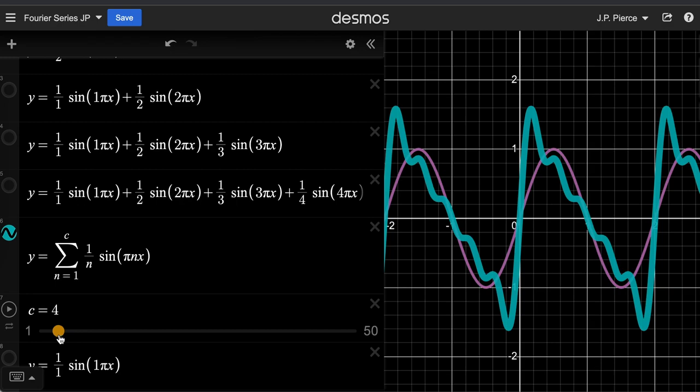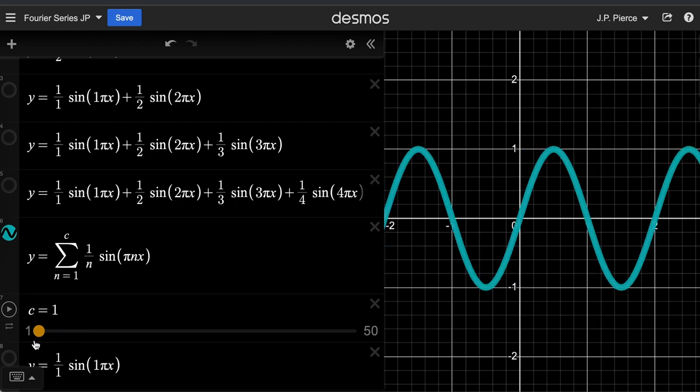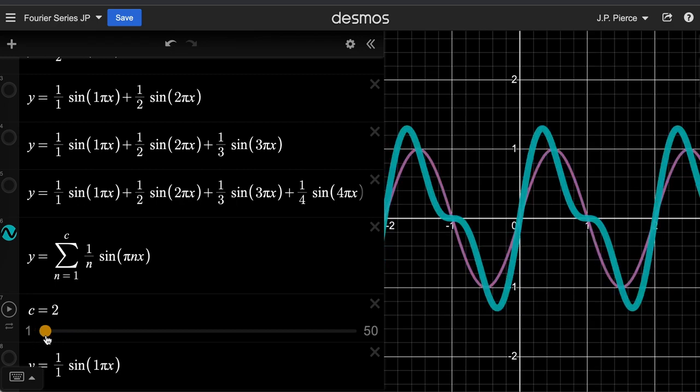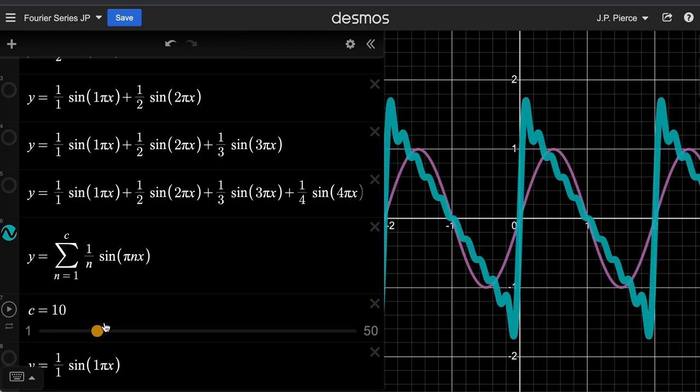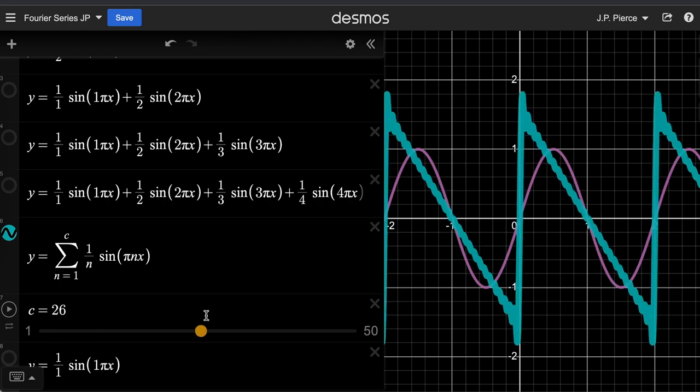So by graphing these sine waves, an infinite sum of these sine waves which just starts out like this with this first sine wave, by graphing that infinite sum you can reproduce the sawtooth or the zigzag function with these sharp corners.